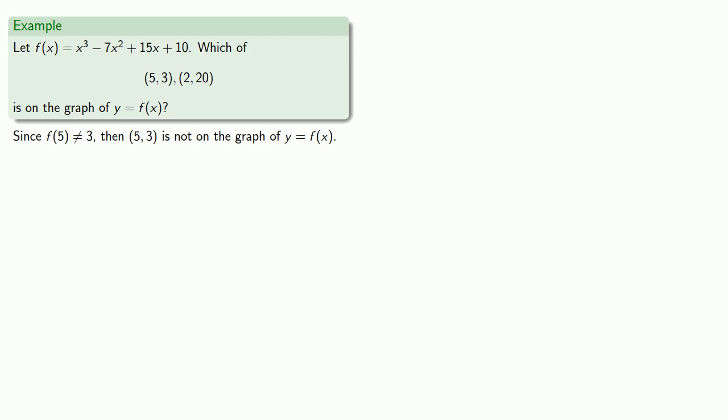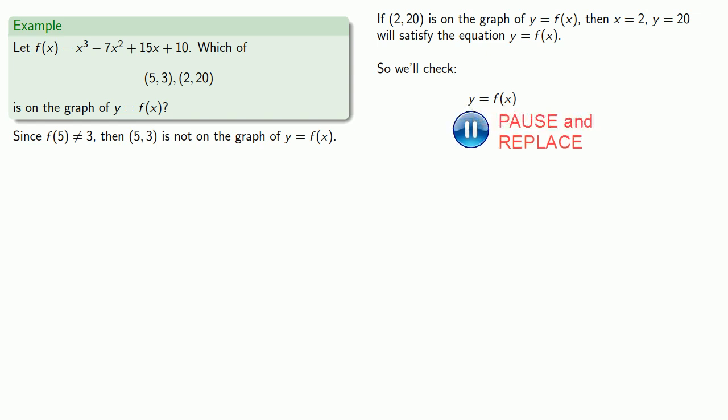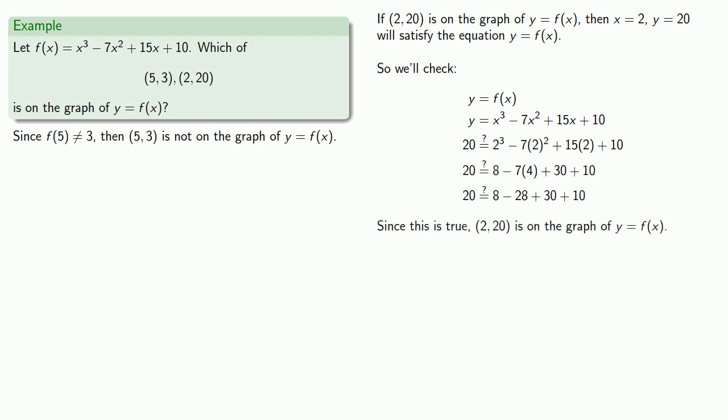Similarly, we can check to see if (2, 20) is on the graph of y = f(x). So equals means replaceable. So again, making all of our replacements, doing a little arithmetic. And this is a true statement, so (2, 20) is on the graph of y = f(x). And again, we can summarize it. Since f(2) is equal to 20, then (2, 20) is on the graph of y = f(x).